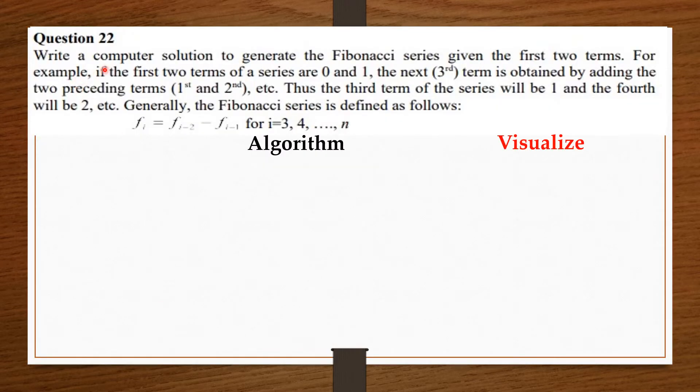Write a computer solution to generate the Fibonacci series given the first two terms. For example, if the first two terms of the series are 0 and 1, the next term is obtained by adding the two preceding terms, etc. Thus, the third term of the series will be 1 and the fourth will be 2. Generally, the Fibonacci series is defined as follows.